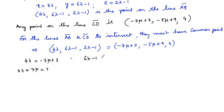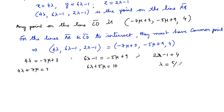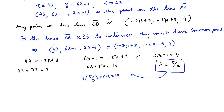Comparing y-coordinates: 6λ - 1 = -5μ + 9, giving 6λ + 5μ = 10 ... (equation 2). Comparing z-coordinates: 2λ - 1 = 4, so λ = 5/2. Substituting λ = 5/2 into equation 2: 6 × (5/2) + 5μ = 10, giving 15 + 5μ = 10, so 5μ = -5, which implies μ = -1.